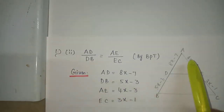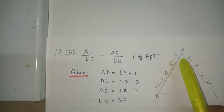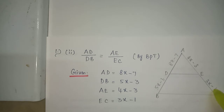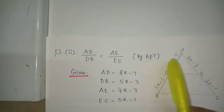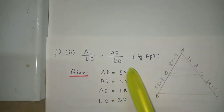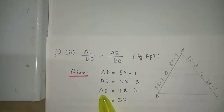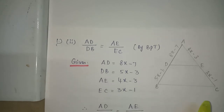First problem, second subdivision. The given measurements are: AD is 8x minus 7, DB is 5x minus 3, AE is 4x minus 3 and EC is 3x minus 1. We have to find the value of x.